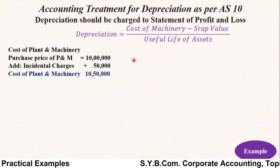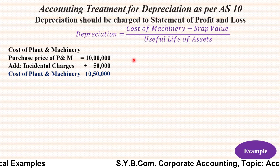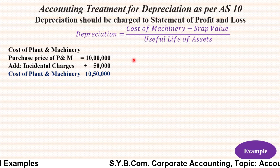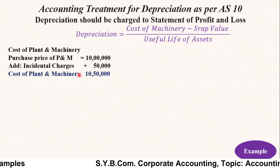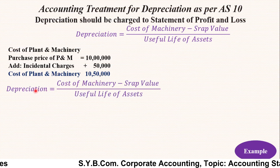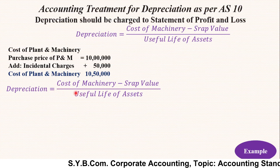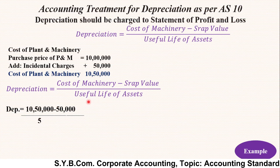First, you have to calculate the cost of machinery, which is purchase price plus incidental charges. Here the cost of machinery is rupees 10 lakh and the incidental charges are rupees 50,000, so the cost of machinery will be rupees 10 lakh 50 thousand. Now you put the amount into the formula: Cost of Machinery minus Scrap Value, divided by Useful Life of Asset.